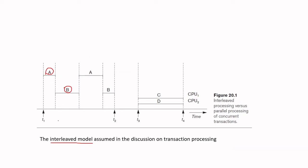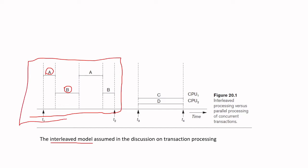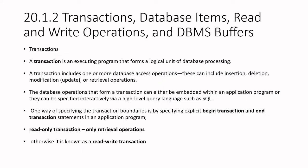The model we are going to use for the discussion about transaction processing is the interleaved model — interleaved execution of processes. We are not talking about a situation where you have multiple processes C and D executing on the system but also have multiple CPUs, in which case there is no conflict in transaction processing. The model we are talking about is the interleaved model.